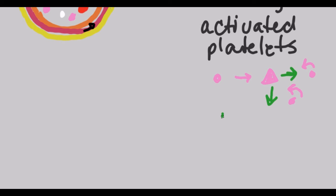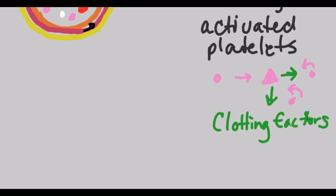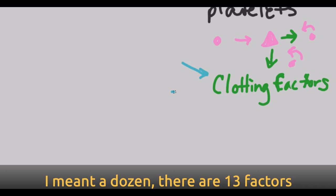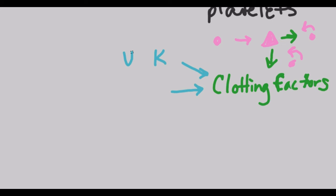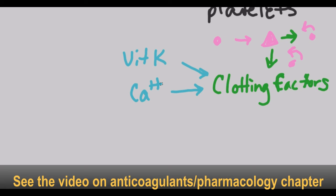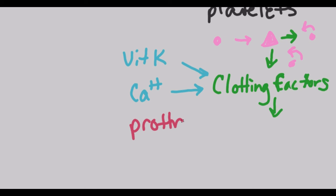Then you get clotting factors. Luckily, we don't have to learn about all of the clotting factors in surgical tech class or anatomy. There are dozens of clotting factors that show up and make a cascade to clot the blood vessel. These are impacted by vitamin K and by calcium, which we will discuss shortly. These clotting factors are going to convert prothrombin into active thrombin.